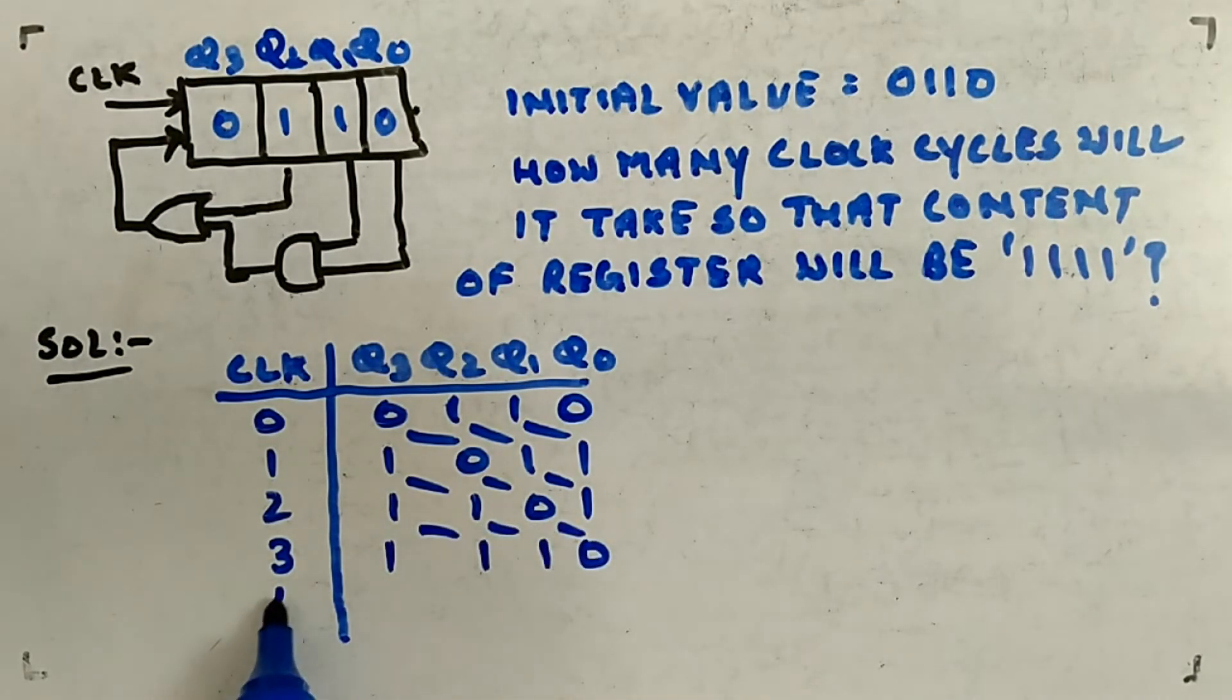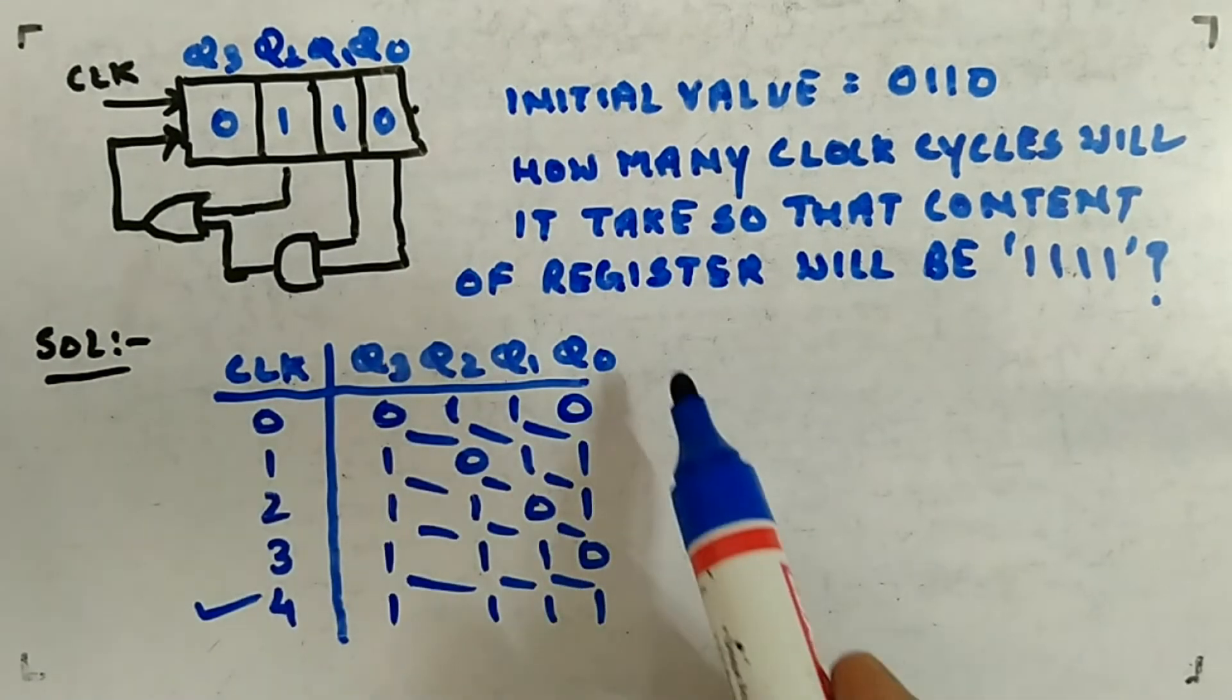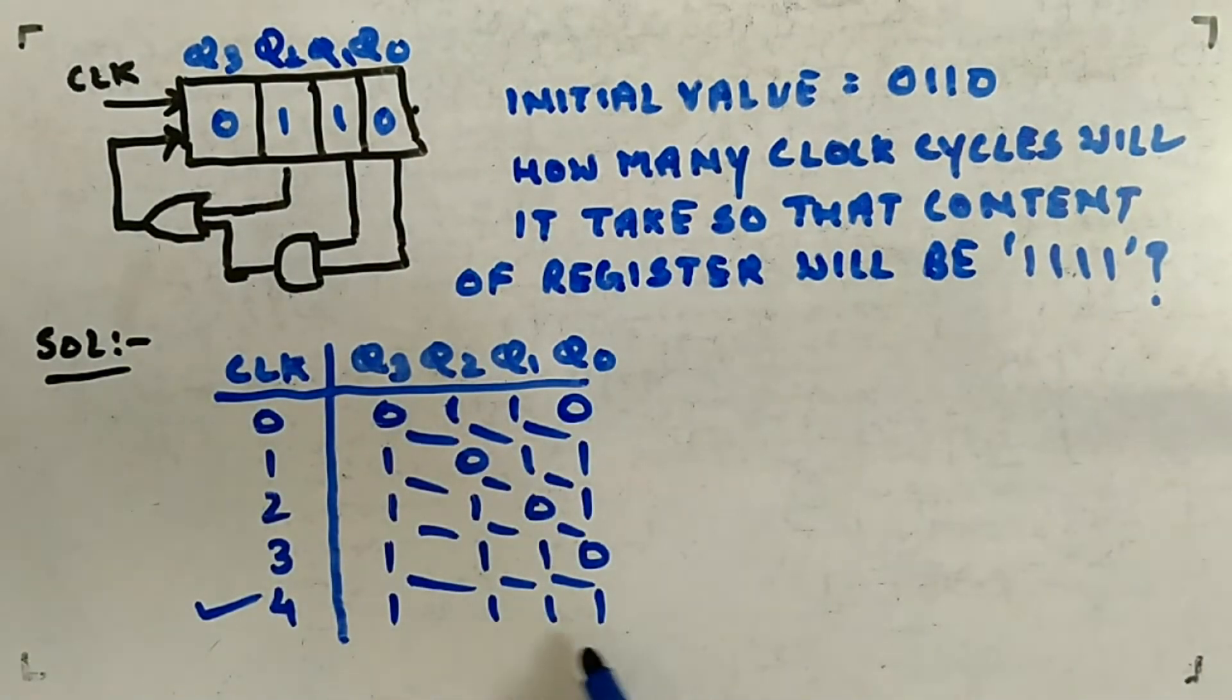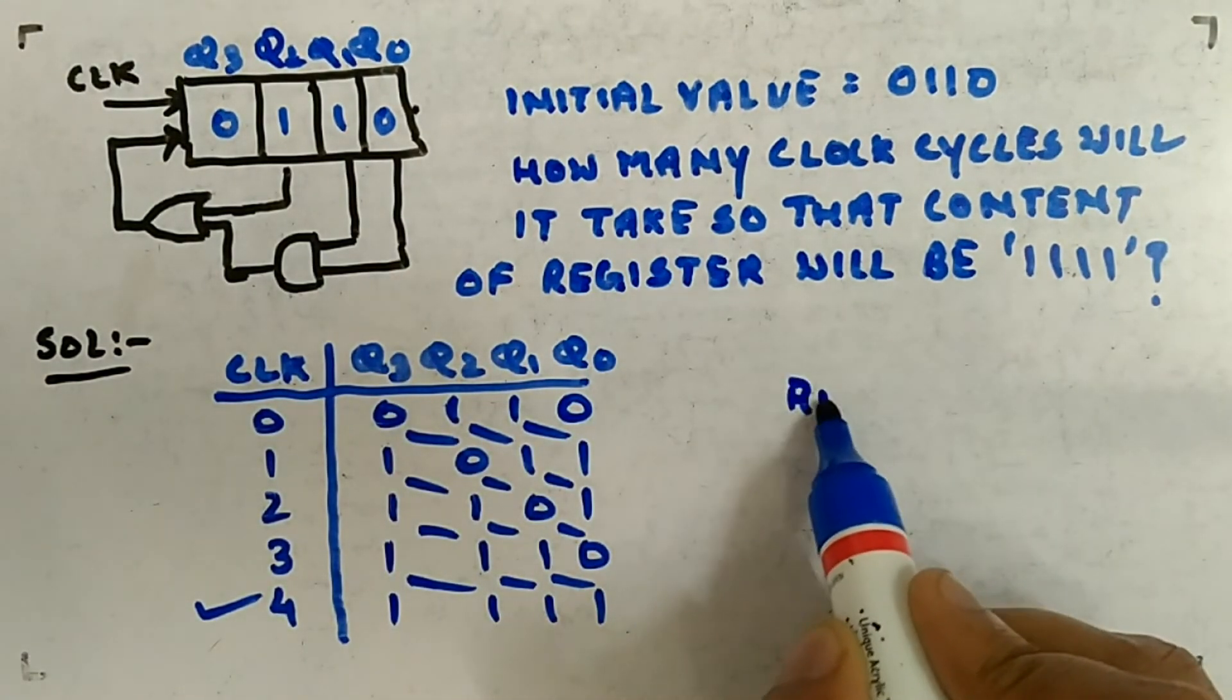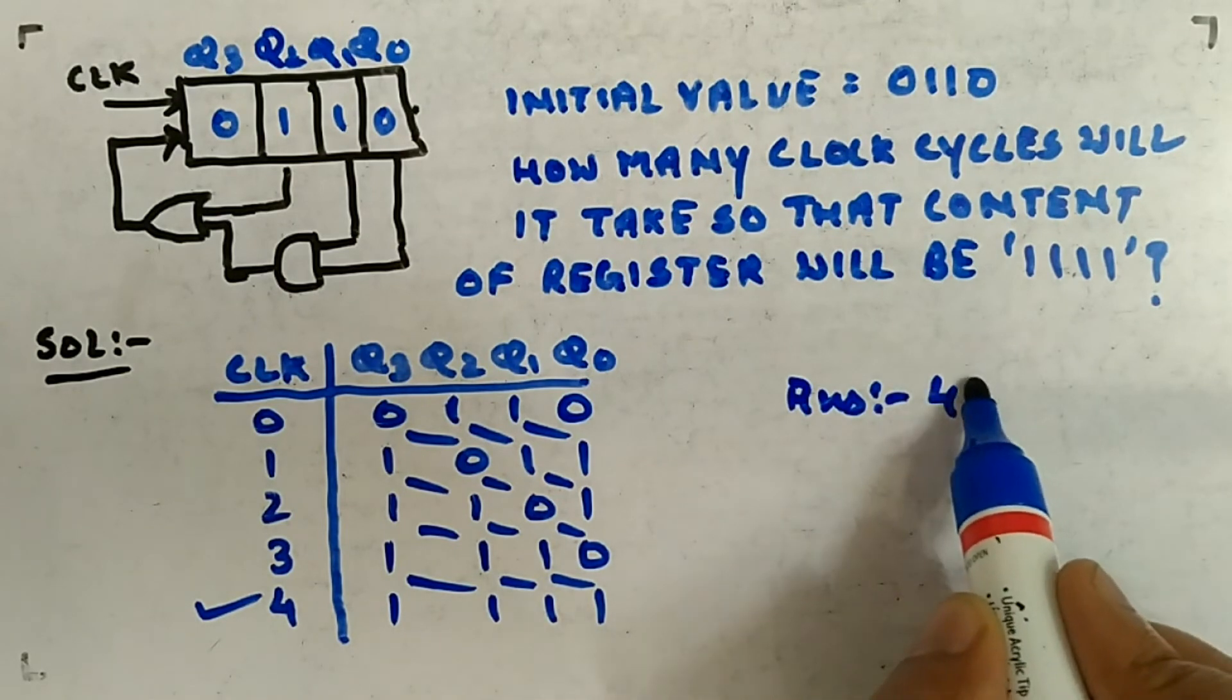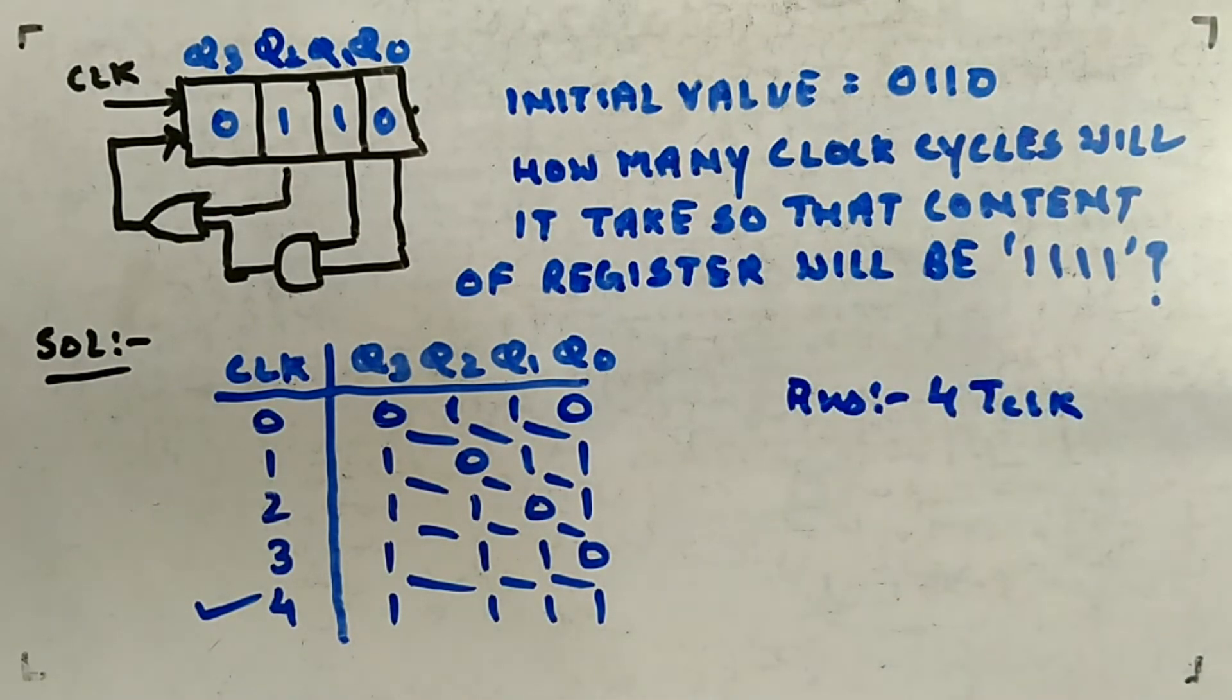...one more: 1111. It takes total four clock cycles to reach this so that the content of the register will become 1111. So answer is four clock cycles. That is the kind of question you can imagine in this.